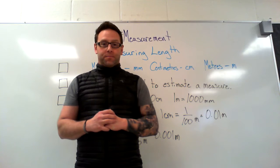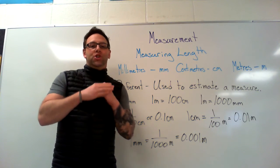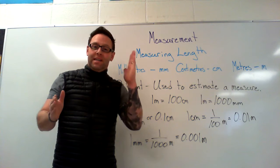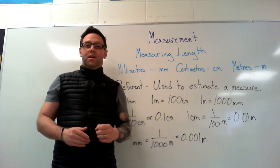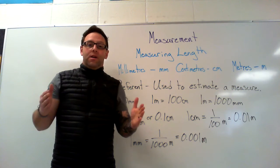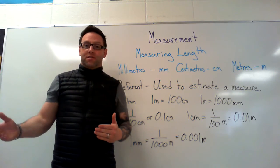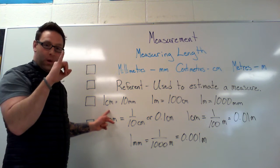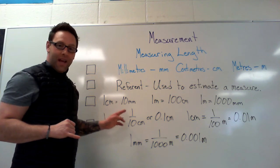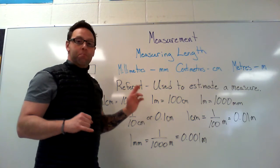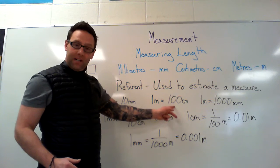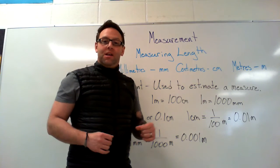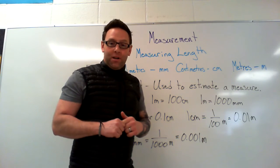The next thing I want to talk about is how each unit of measure compares to the others, because we can report the same length in different units. Let's look at what I have written over here: one centimeter — remember the referent about the width of your pinky finger — is equal to 10 millimeters. One meter, that big long meter stick, has 100 centimeters in it. And if I look at that meter in terms of millimeters, one meter is 1,000 millimeters.